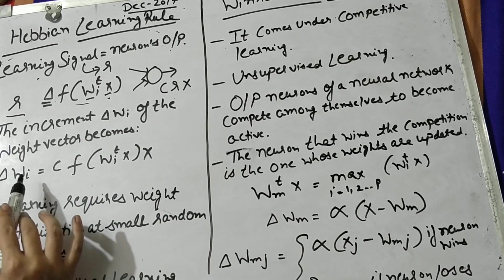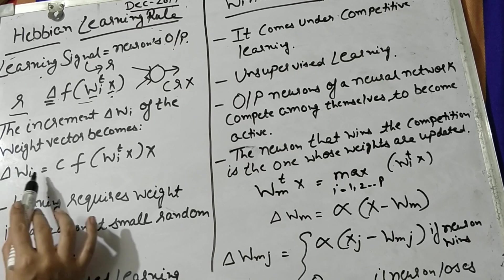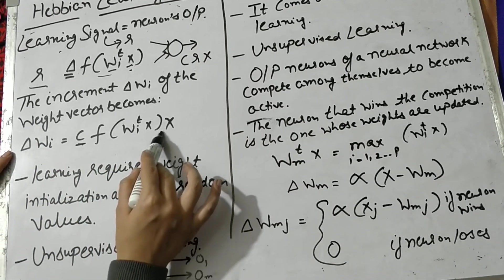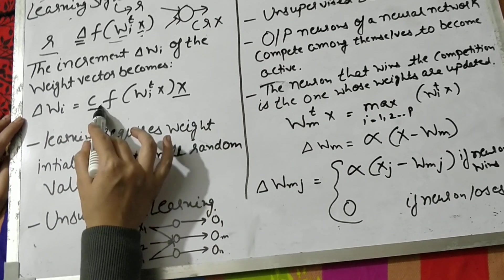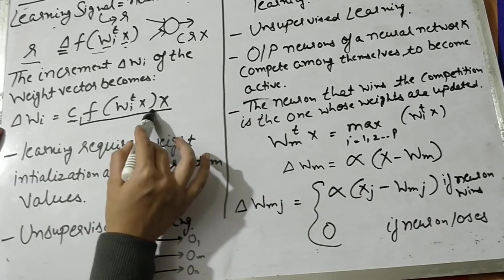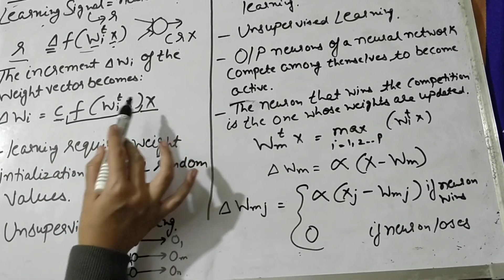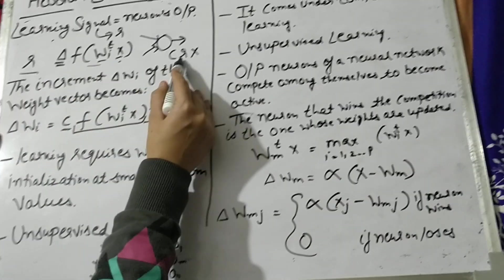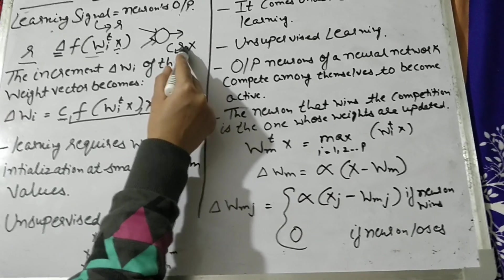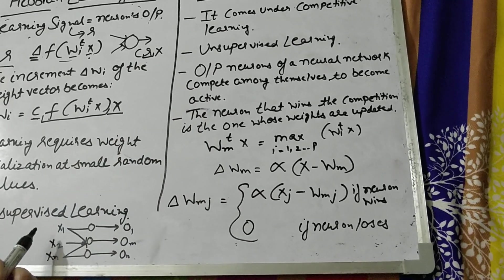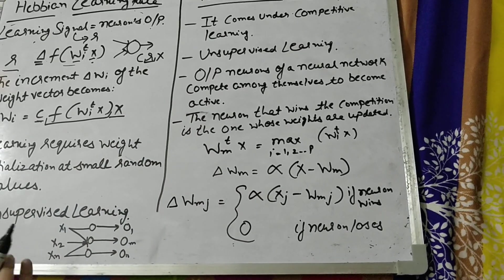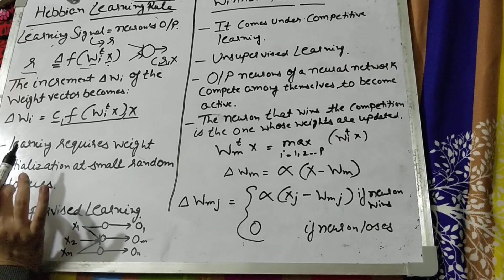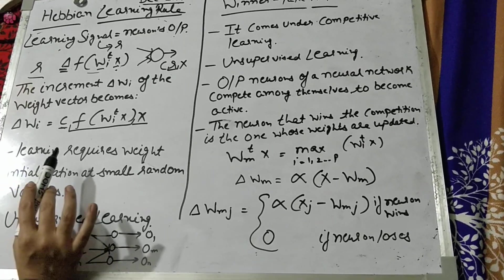Based on this formula, you can evaluate the incremented weight value of the weight vector, which becomes c times x times the learning signal. Here c is a constant and x represents the input values, which are always given to you.